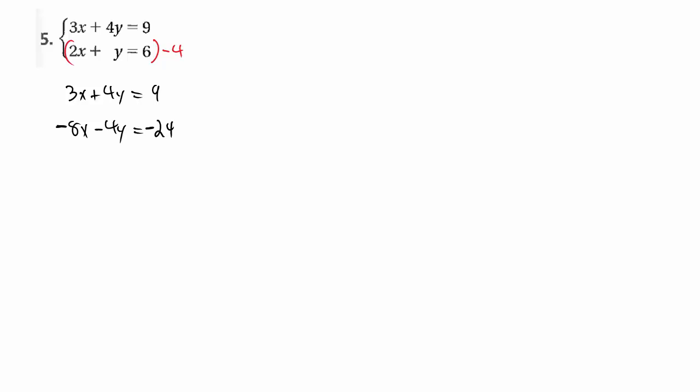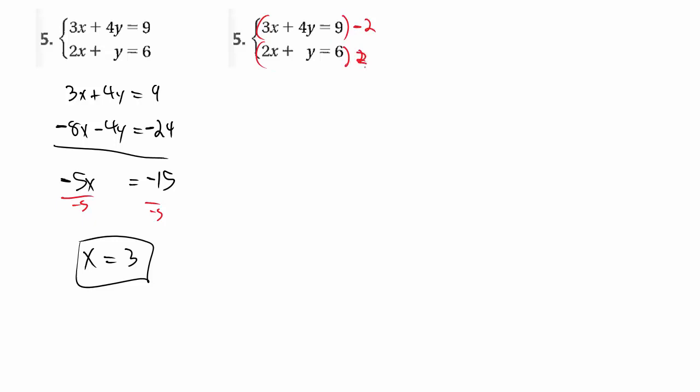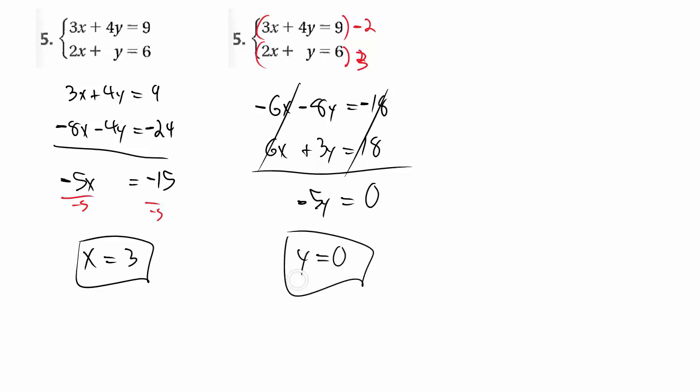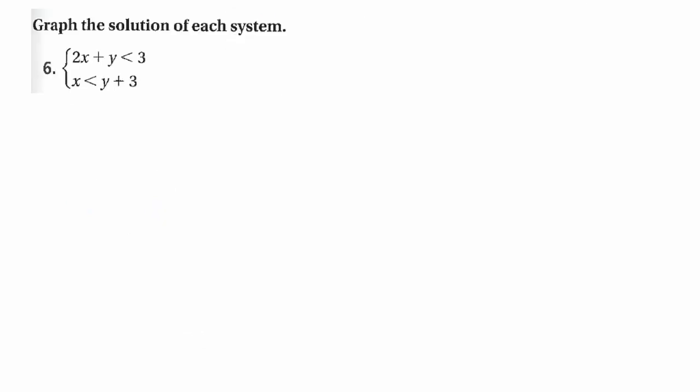For number 5, I'm going to solve this one using elimination. I'm going to choose to eliminate the y first. So I multiply the second equation by negative 4, and I get x equals 3 once I simplify. Or you could have chosen to eliminate the x first, but you have to do something to both equations. The first equation I multiply by negative 2. The second equation I multiply by a positive 3. You could have alternated where that negative is, but either way you get y equals 0. So your solution is 3, 0, or x equals 3, y equals 0. You can write it in any way you want.